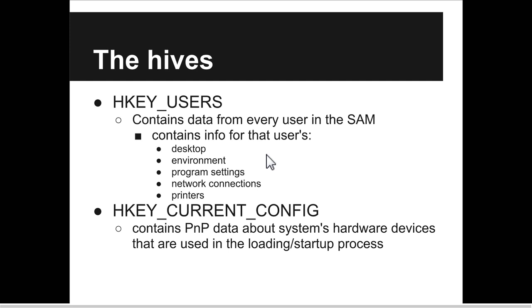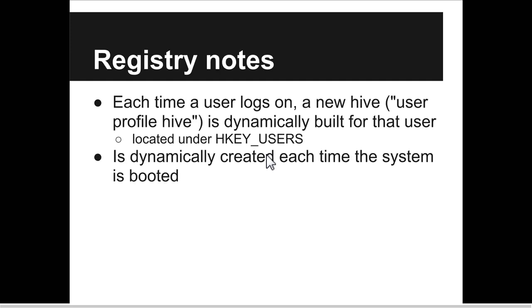HKey Users contains everything about every user in the SAM — info for that user's desktop, their environment, variables, program settings, network connections, and printers. Current Config contains all plug-and-play data about system hardware devices used in loading and startup. Every time a user logs in, a new user profile hive is dynamically built for that user. And every time the system boots, it doesn't read the registry all from some static file — it's dynamically built from all these files, from startup systems and subsystems and services that gather information about plugged-in devices, current hardware setup, network setup, etc.